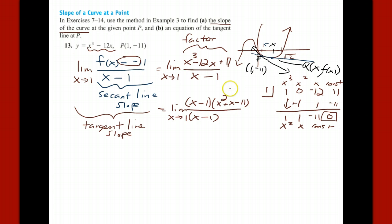So this quadratic that multiplies by x minus 1 is x squared plus x minus 11. And you don't have to worry about trying to factor that further. Just leave it as it is. And we now cancel the x minus 1 terms.